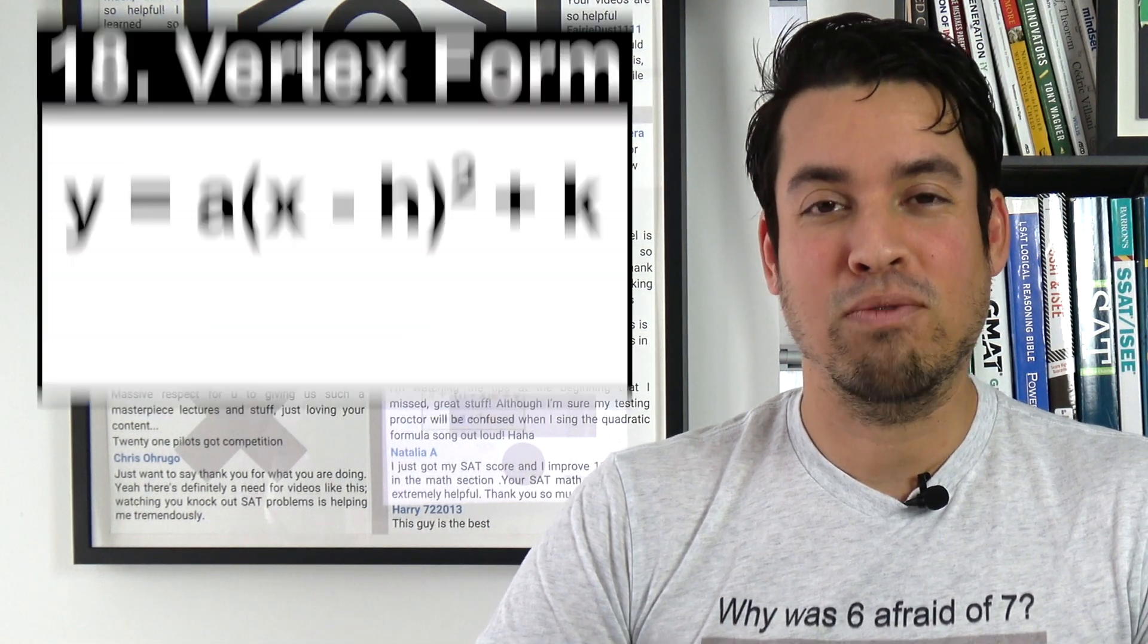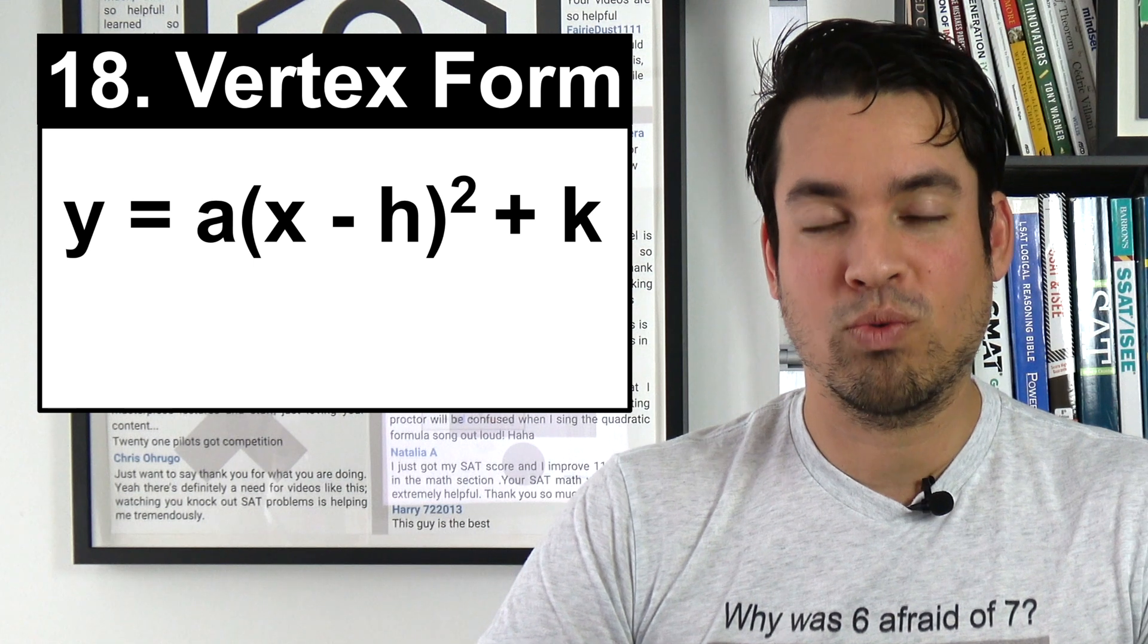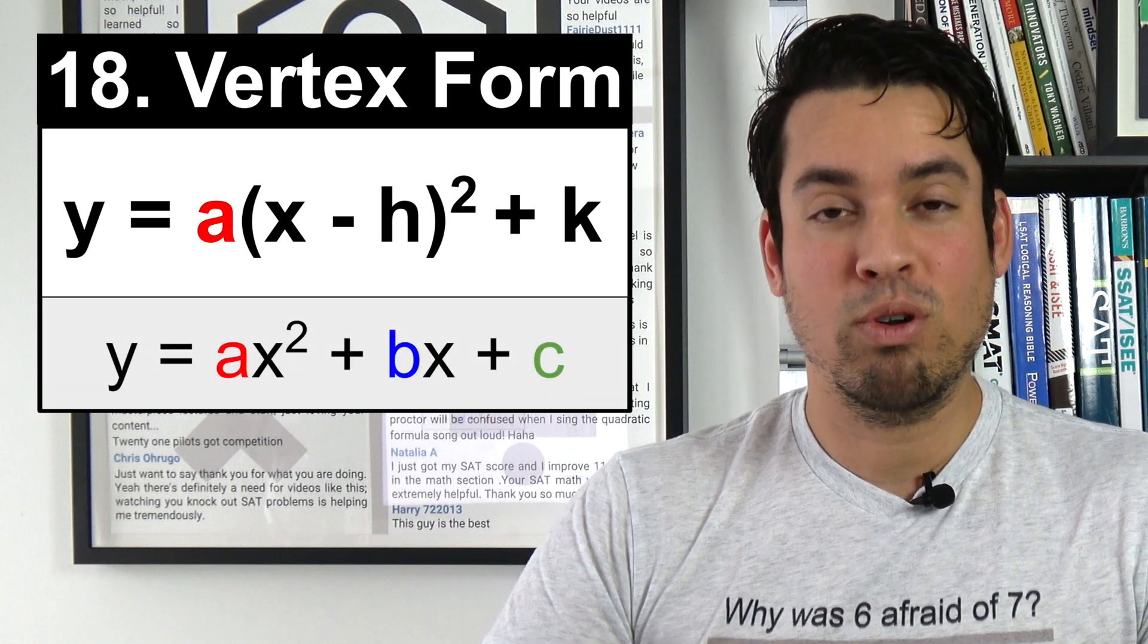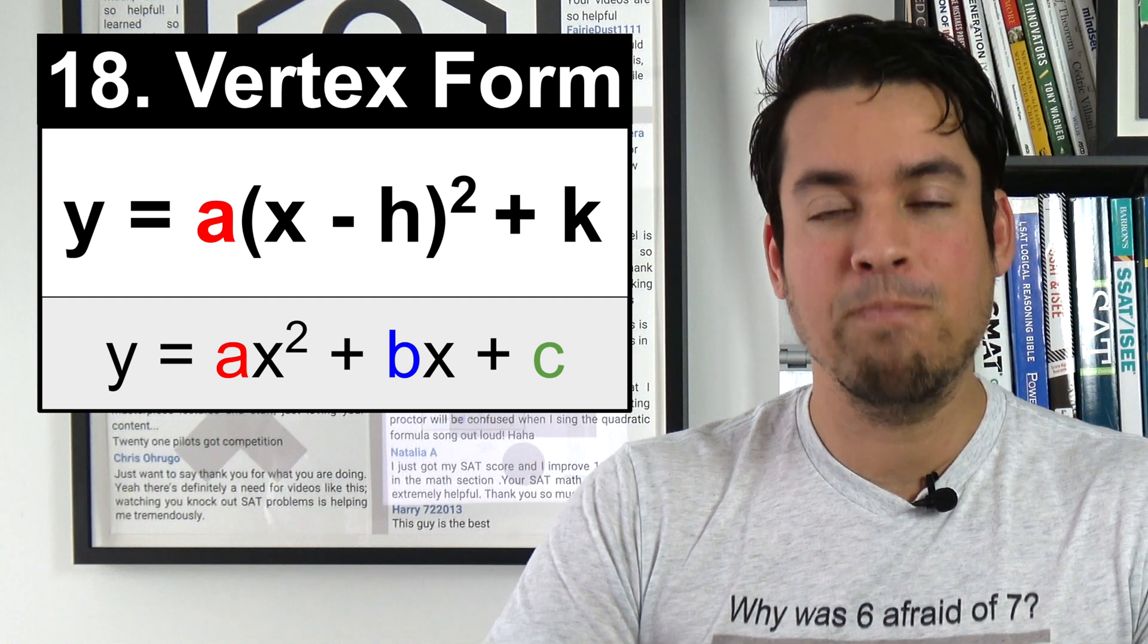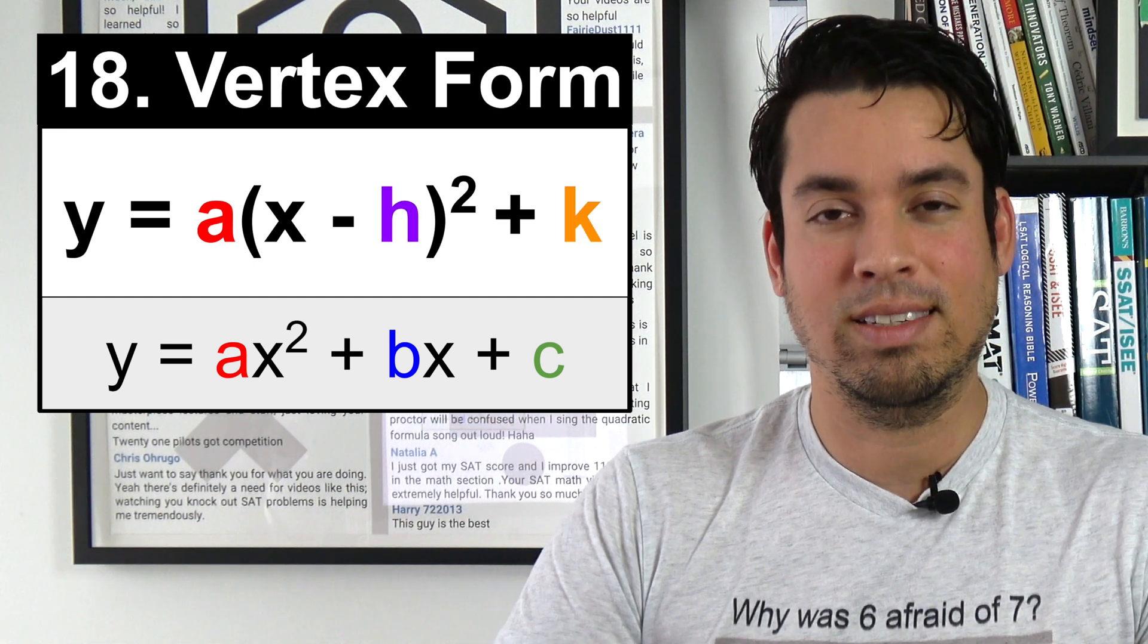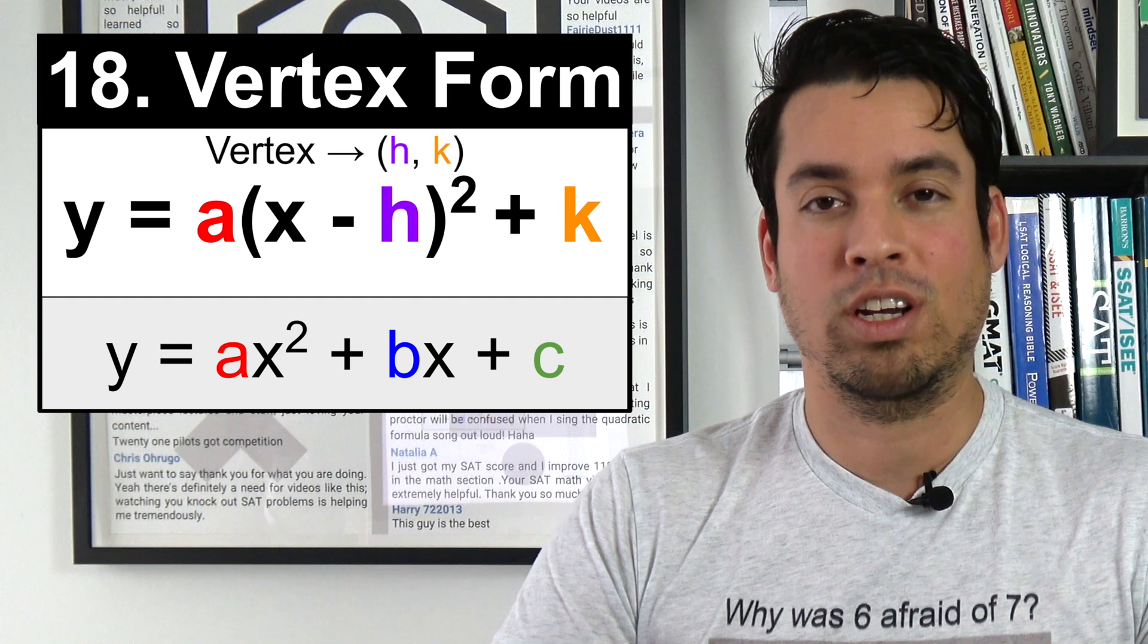Next on the list is vertex form for a quadratic. This is a really important formula to know because if you look at this formula, you can immediately tell where the vertex is. The vertex is simply going to occur at h comma k.